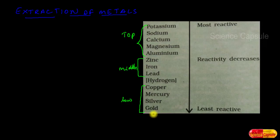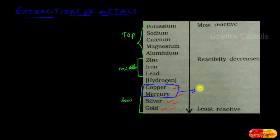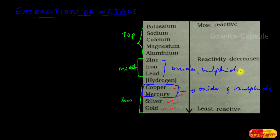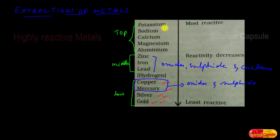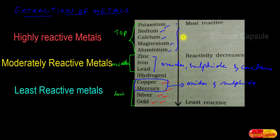Some metals are available in the earth's crust in a free state, and others are in a combined state. Elements at the bottom of the activity series — gold, silver, mercury, copper — are mostly available in free state, though copper and mercury also exist in combined form as oxides and sulphides. Elements in the middle — zinc, iron, lead — exist mostly as oxides, sulphides, and carbonates. Elements at the top — potassium, sodium, calcium, magnesium, aluminium — are highly reactive and never exist free in nature.